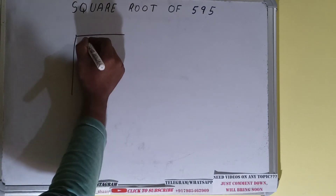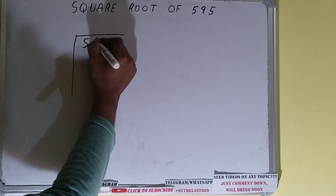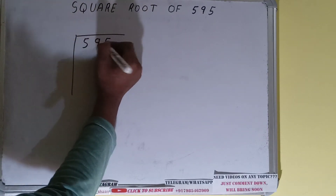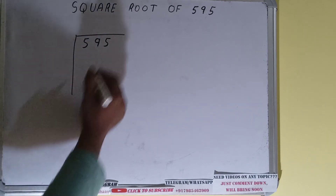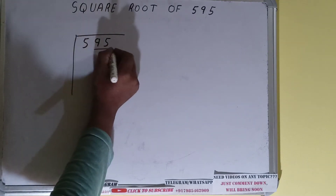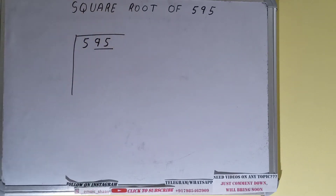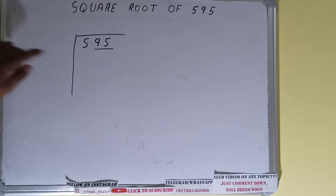First we need to write the number, then we need to form pairs from the right-hand side. Only one pair can be found and this five will be left out.